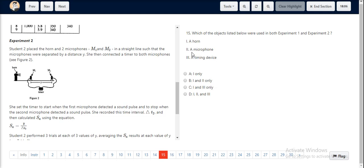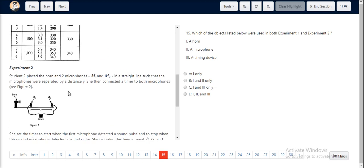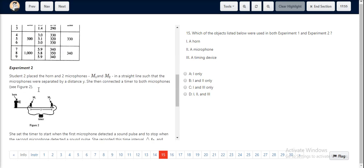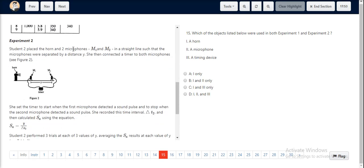Now we look at option 2, the microphone. If we look at experiment 1, there was no microphone used. However, in experiment 2, two microphones M1 and M2 are placed in a straight line. Hence, the microphone wasn't used in experiment 1, but was used in experiment 2.